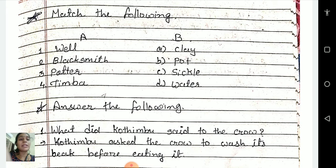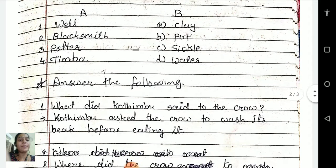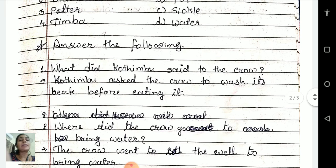Second one: blacksmith. Which is the correct option for blacksmith? Clay — no. Pot — no. Sickle — yes. Third one: potter — the correct option is pot. Then timber — the correct option is clay.